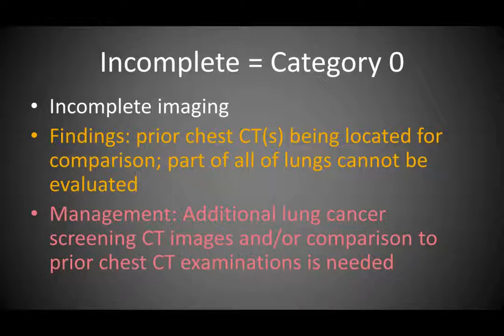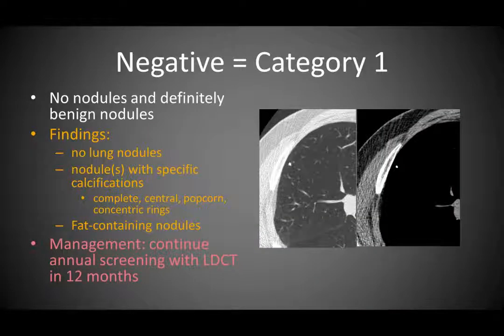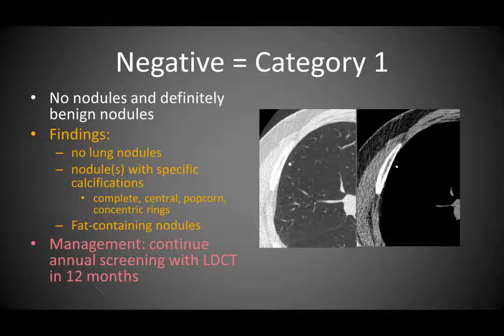Category 1 is a negative screen: the patient has either no nodules or nodules that are definitively benign—completely calcified, with central, popcorn, concentric, or lamellar calcification patterns—or nodules containing fat suggesting a hamartoma. This patient continues with annual screening with low-dose CT in 12 months.